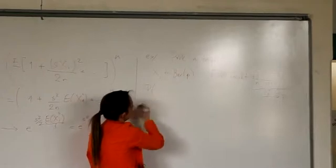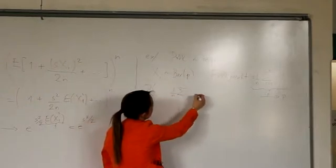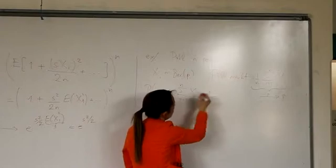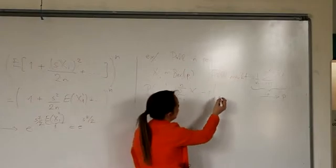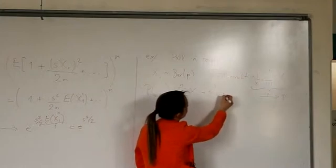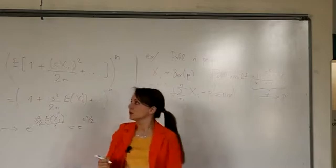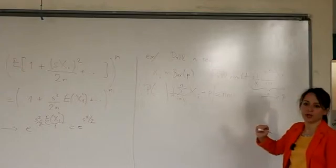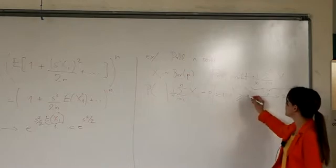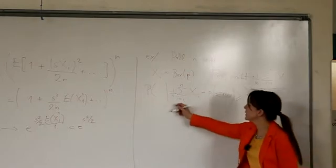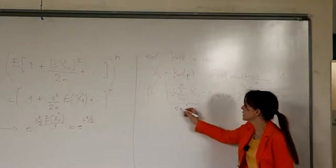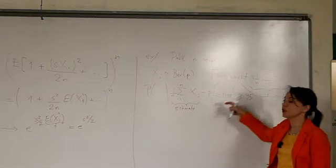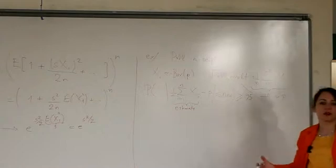We want the probability that the poll result, which is summation Xi divided by n from i equals 1 to n, minus the true mean, differ by less than or equal to 0.01 is at least 95%. So I rephrase the question a little bit. The probability that our estimate is within 0.01 of the true mean should be at least 95%. This is our reliability requirement.